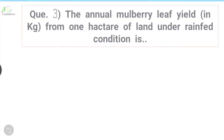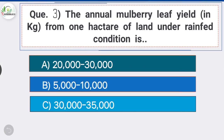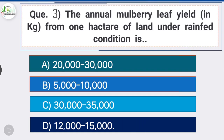Question number three: the annual mulberry leaf yield in kg from one hectare of land under rain-fed condition is — option D is the correct answer — 12,000 to 15,000. The annual mulberry leaf yield in kg from one hectare of land under rain-fed condition is 12,000 to 15,000.